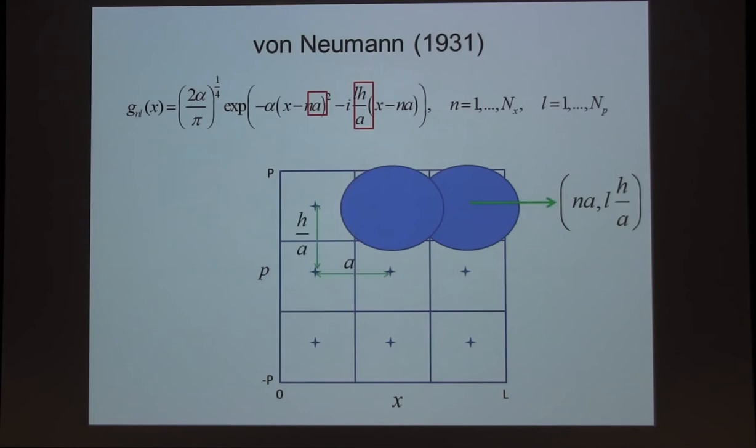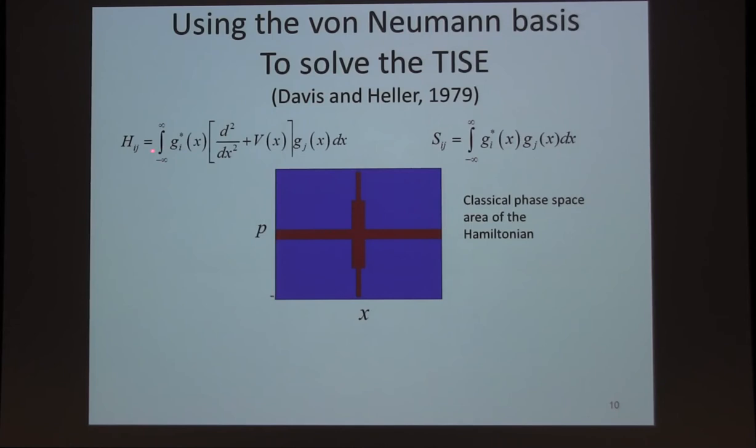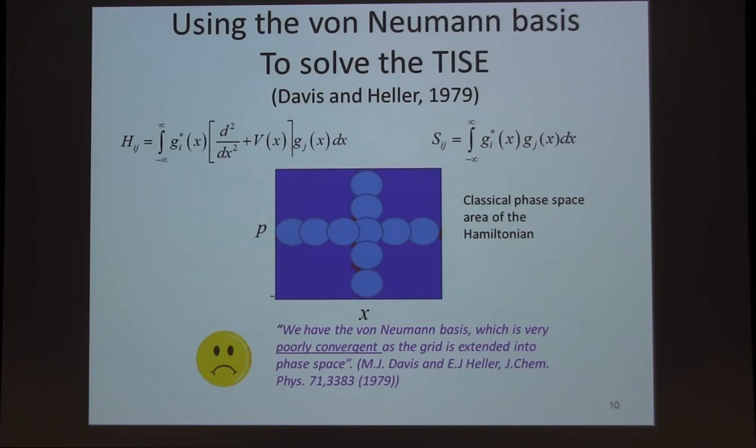And they did it. They built the Hamiltonian matrix. So here are these Gaussians as the basis functions. And here's the kinetic and potential function. And because it's a non-orthogonal basis, you have to construct the overlap matrix of the Gaussians. And they did all that. And they covered just the part of the classical phase space that they thought they needed. And they got results that were very poorly convergent. And in fact, even when they filled the entire phase space, the results contained very large errors. And this remained as a puzzle in the literature.